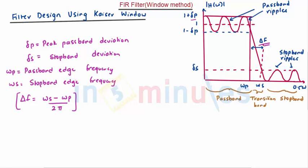In Kaiser window there are two main parameters: the shape parameter which is given as beta, and the length of the window which is n plus 1.